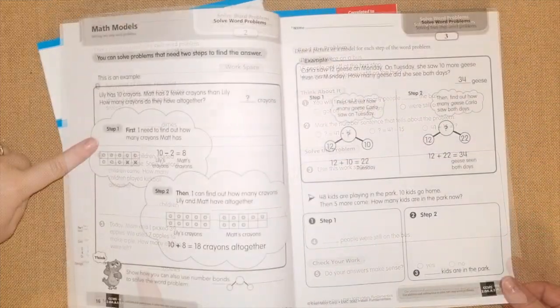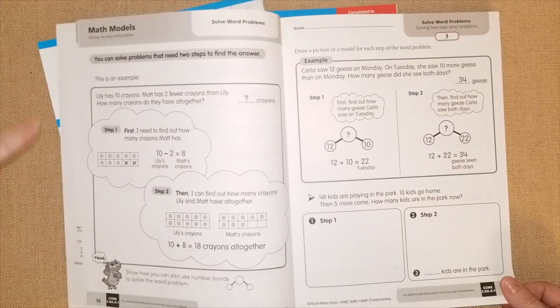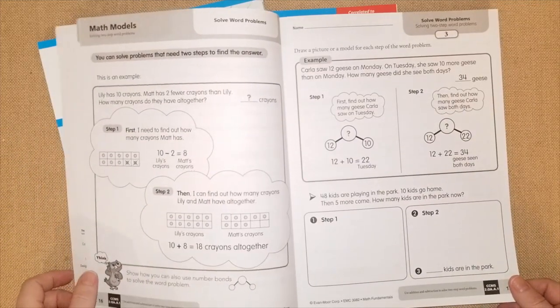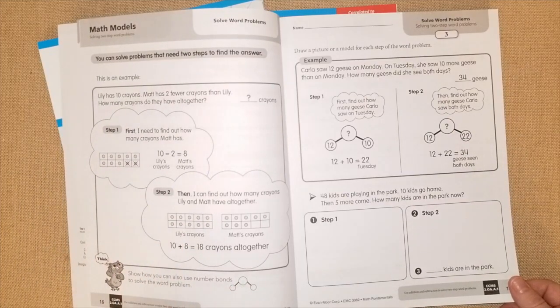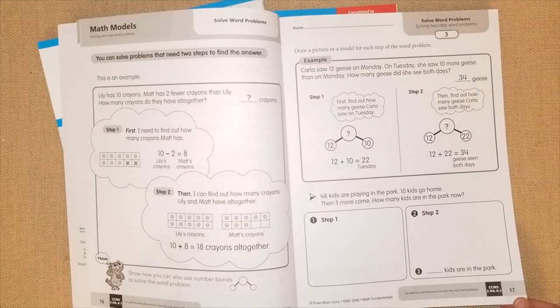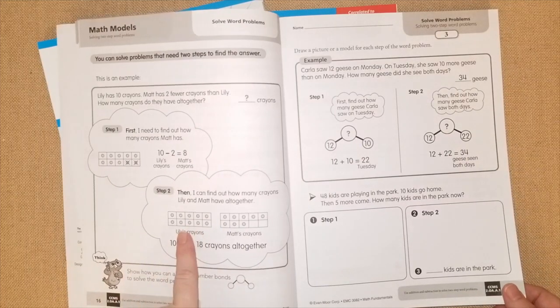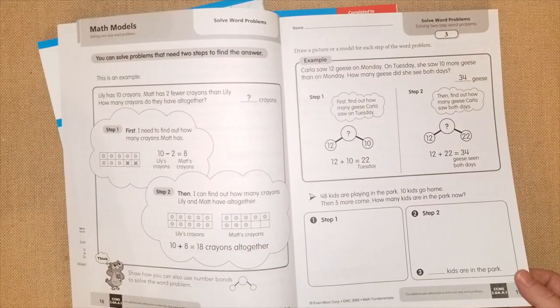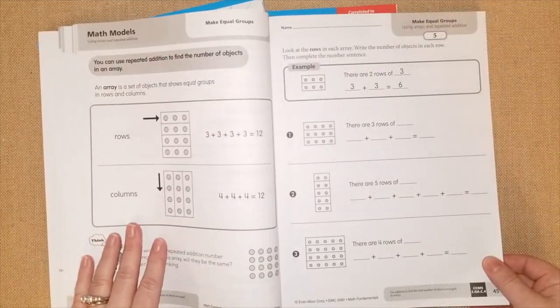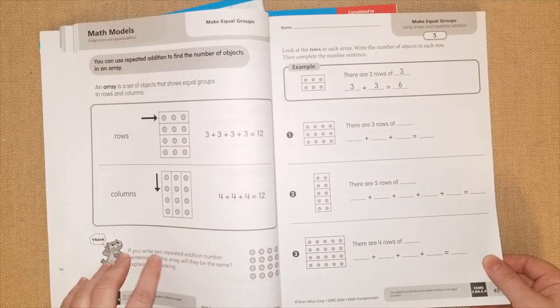This is another solve the problem in two steps where they're using the 10 frames and I think that's great. So they can see Lily has 10 crayons and Matt has 8 crayons, so all together they have 18 because they see the 10 frame here and then they see the 8 and they could do their mental math pretty quickly. They're also showing you repeated addition to find the number of objects in an array, so this is going to help them in the future with multiplication.